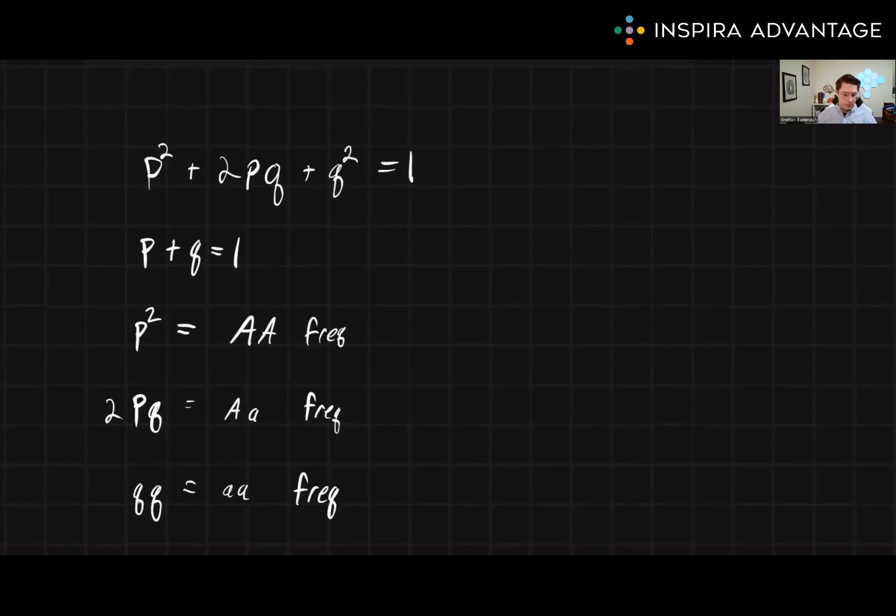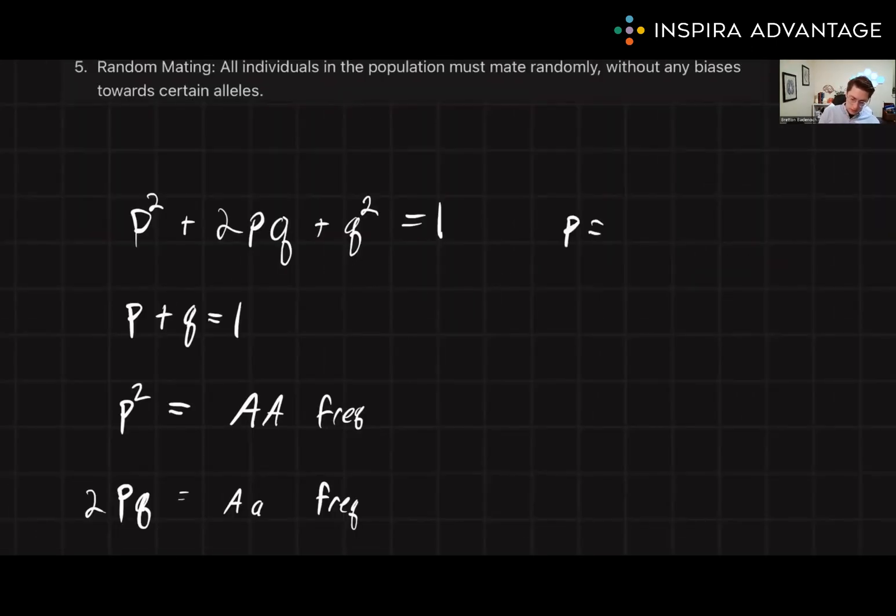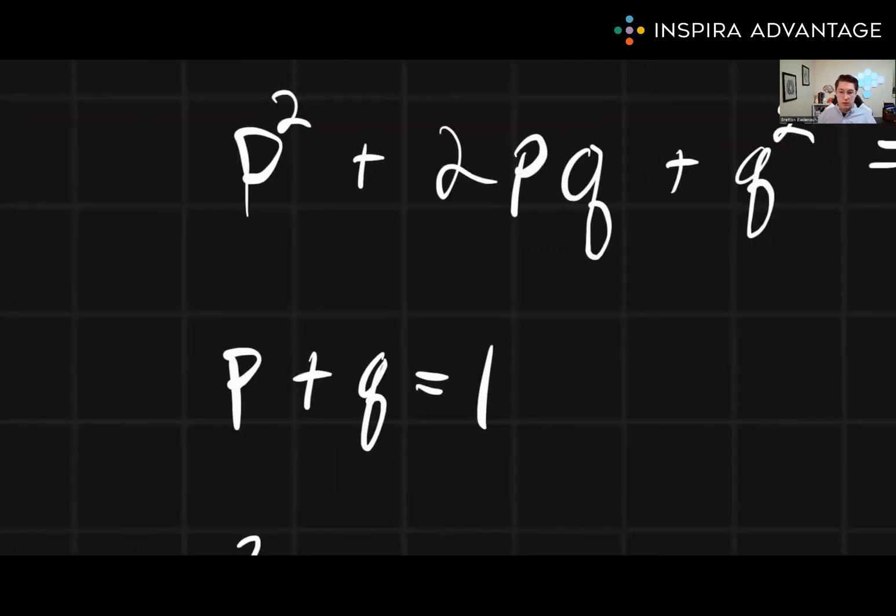The Hardy-Weinberg equilibrium can be represented mathematically by the following equations. p² + 2pq + q² = 1. This is where p equals the frequency of the dominant allele, while q equals the frequency of the recessive allele. There are also a number of other equations that are related to the Hardy-Weinberg equilibrium, including p + q = 1. This equation states that the sum of the frequencies of the dominant and recessive alleles must equal 1.